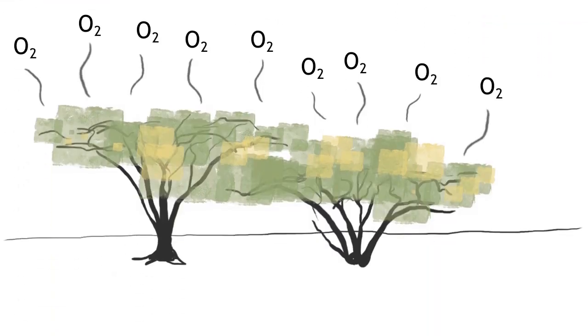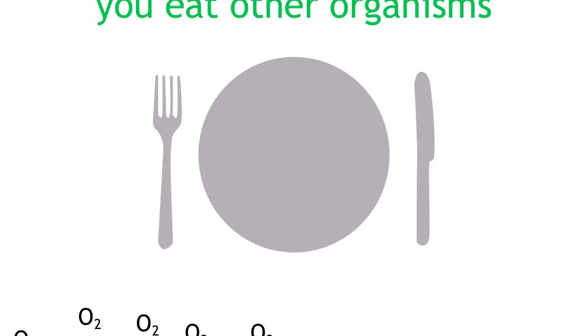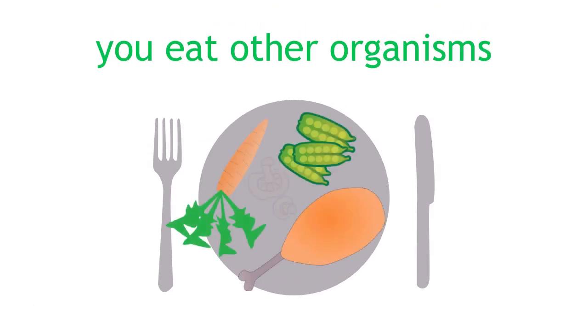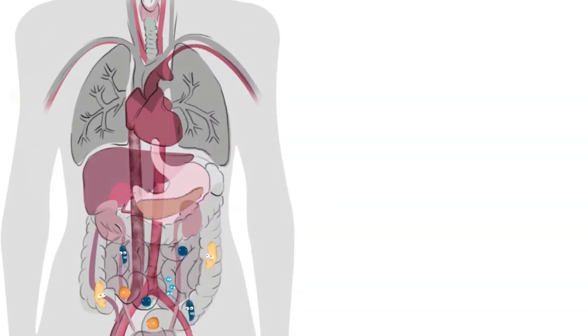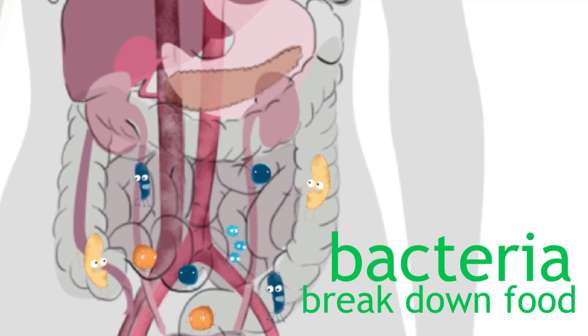You breathe oxygen that's been released into the air by photosynthesizing plants. You eat animals, plants, and even fungi as nourishment for your body. And once that food is in your body, bacteria that live inside of you break it down so your body can use it.